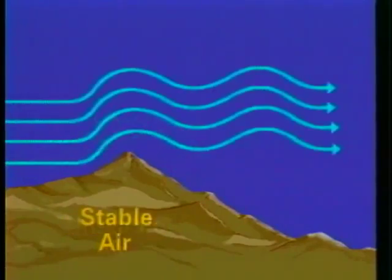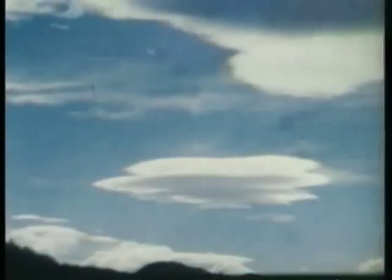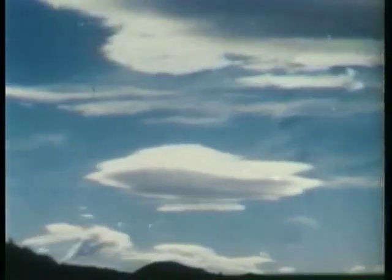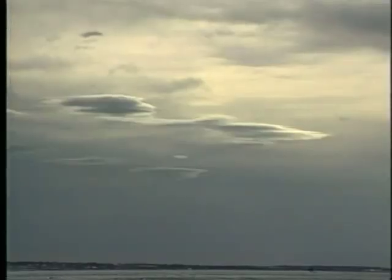If the air is stable the wind flow will be smooth on the windward side. As it crosses the mountain it tends to flow in layers or waves. The crests of these waves are often marked by lens shaped clouds called standing lenticulars, because they form in the updrafts and dissipate in the downdrafts giving them an appearance of remaining stationary. Any time this type of cloud is present you should expect turbulent conditions.